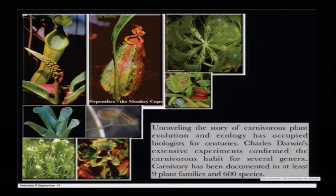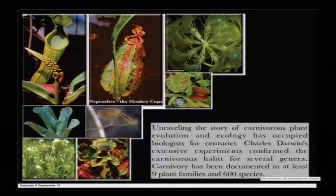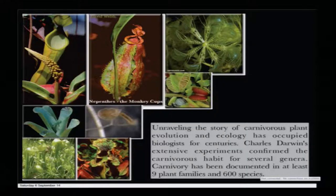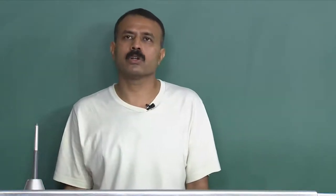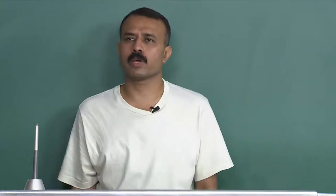Some of you may have seen some of these pictures. These are just a handful of examples of a series of carnivorous plants available in nature. There is a huge population — at least nine families of plants with six hundred species distributed all over the world. We really do not know how they evolved, and it is a very interesting story of evolution — why they evolved, how they evolved, what made these plants so very specialized compared to other plants which depend on water and other molecules.